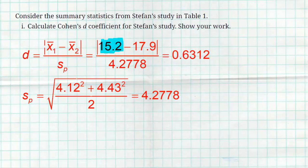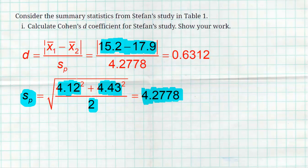Calculating Cohen's D: the difference of our means was 2.7, and taking the absolute value gives positive 2.7. For the pooled standard deviation, I used the formula: the square root of (4.12² + 4.43²) / 2, which gives 4.2778. Dividing 2.7 by 4.2778, I got a Cohen's D coefficient of 0.6312. I was just following the formula to get this value — not too bad.